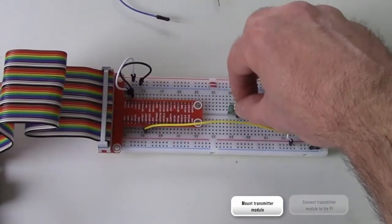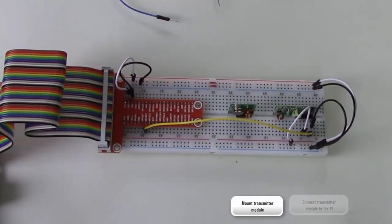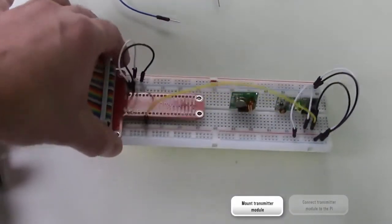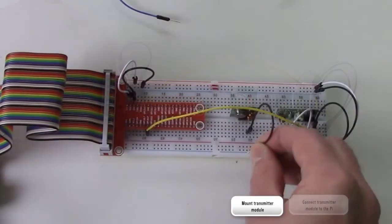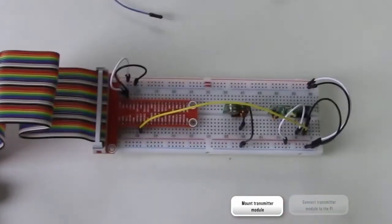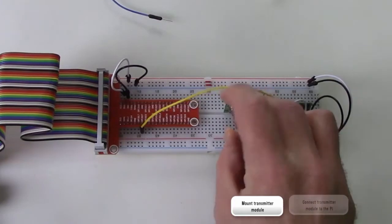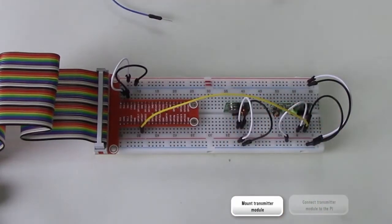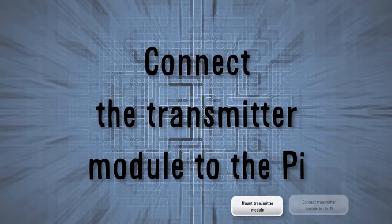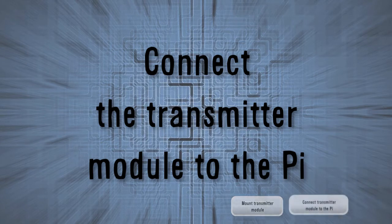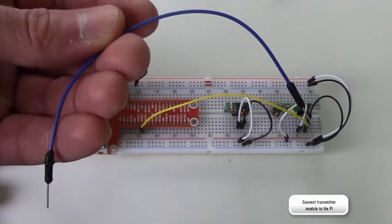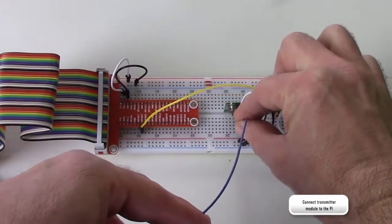Mount the transmitter module between the expansion board and the receiver module. Connect the ground pin to the negative rail. Now connect the VCC pin to the positive rail. Now connect the data pin to GPIO pin number 4 on the Pi.